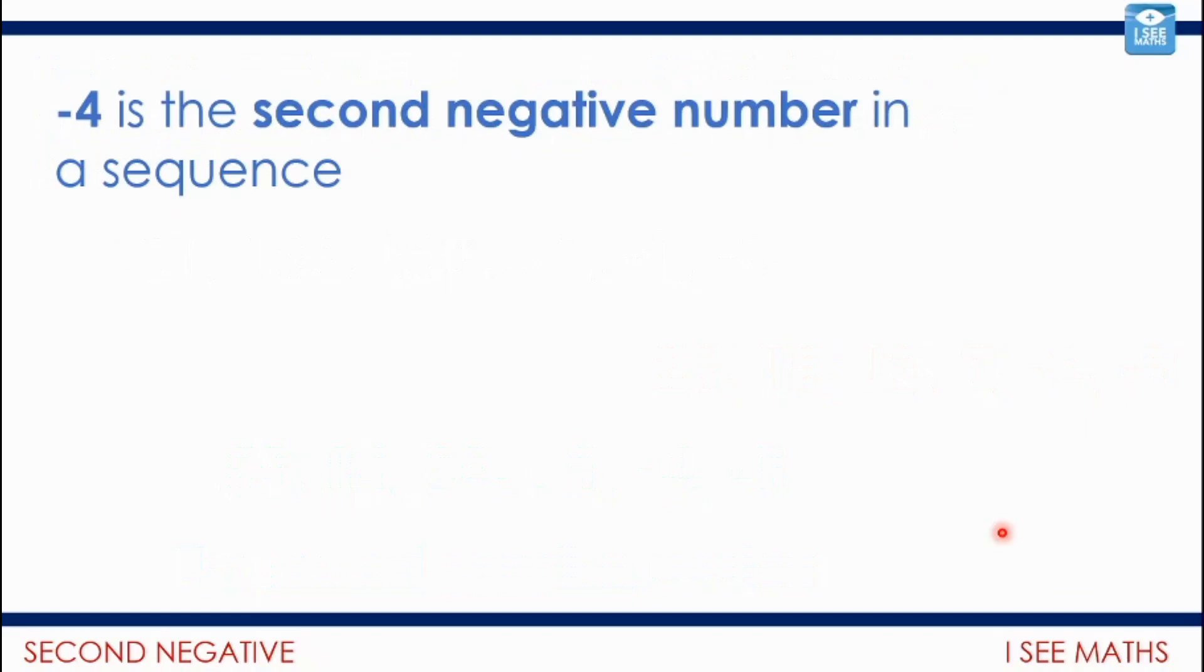Okay, now minus four is the second negative number in a sequence. And this is your task. What could the sequence be? Design different sequences that it could be. You might have one. You might have two. You might have, well, you could have any number. Be creative. Pause the video. Have a go.